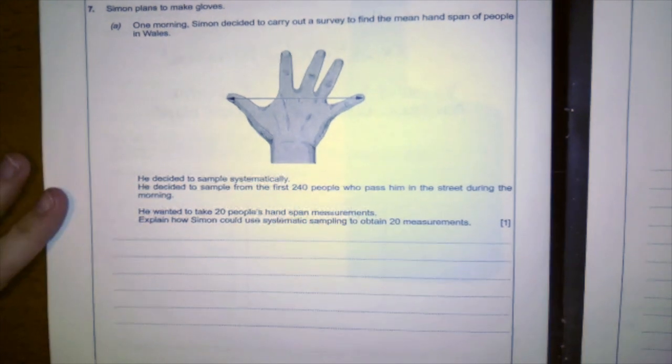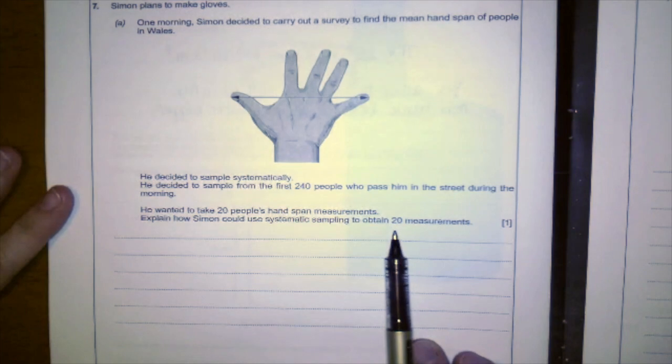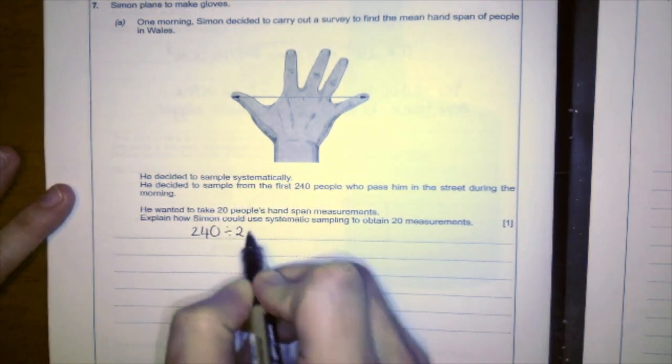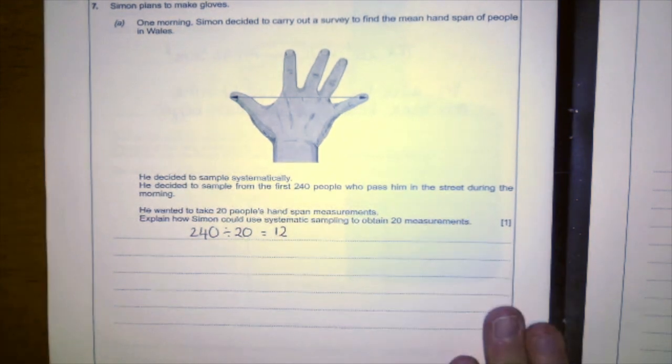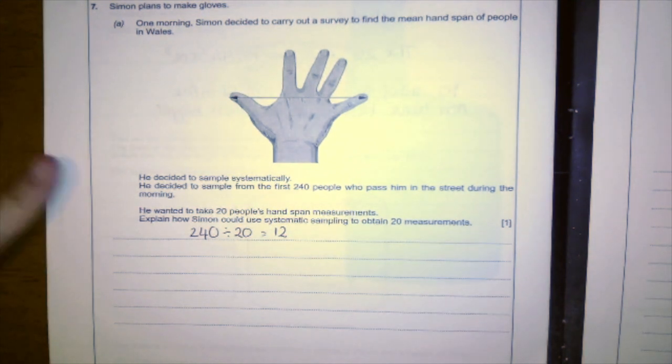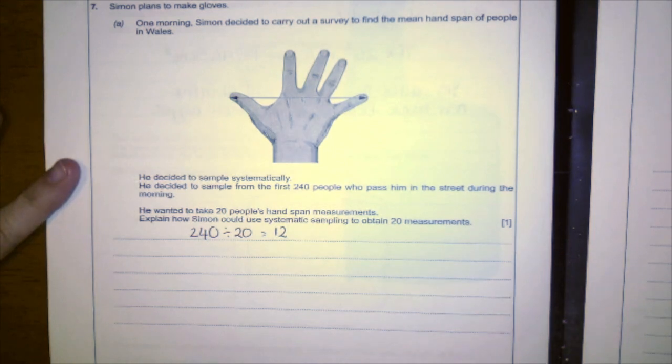Well, if there are 240 people and you need 20 measurements, if you do 240 divided by 20, that's 12. So you need to find every 12th person. So if they're in groups of 12, if you pick one from each group of 12, then that will give you 20 measurements out of the 240 people.